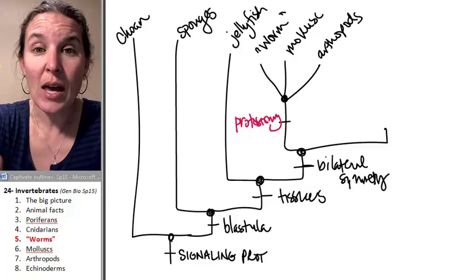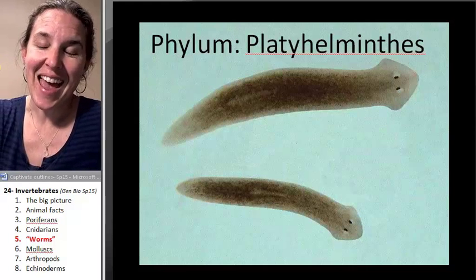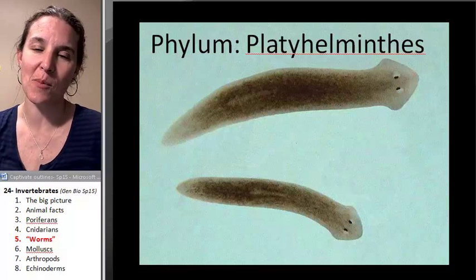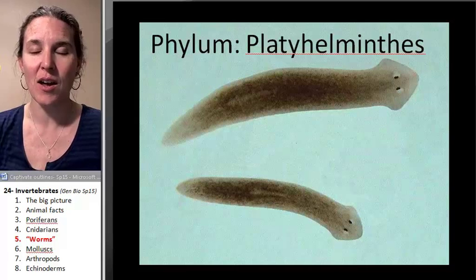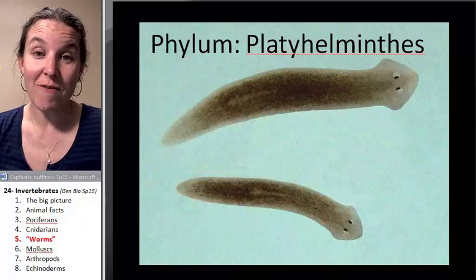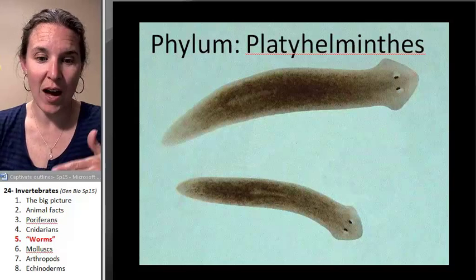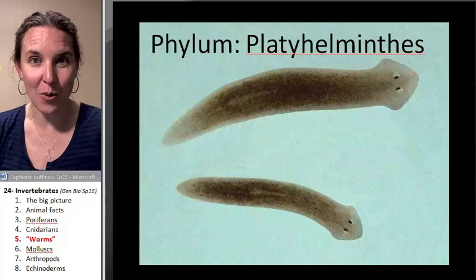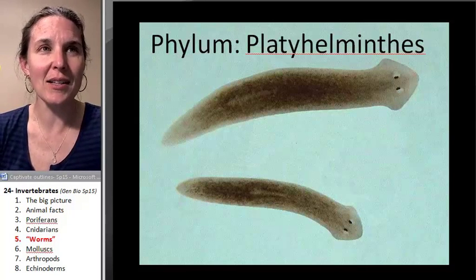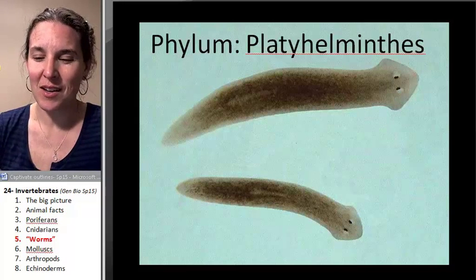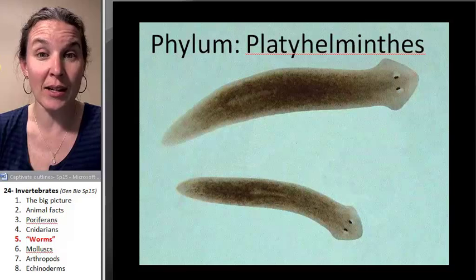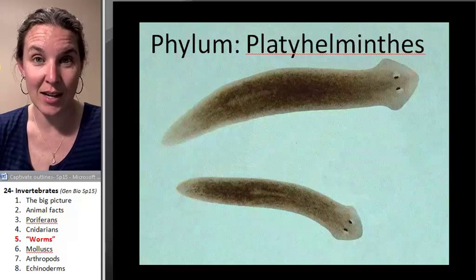The worm group is going to include the phylum Platyhelminthes. There are a lot of questions when it comes to Platyhelminthes about how these things are actually related to each other. But that little guy is cuter than all get out — you can actually find them. If you go to a river and look under a rock, you can find little Platyhelminthes flatworms. My kids are super obsessed with these things; we actually had some for pets in zoology — they were feeding them and observing their behaviors.